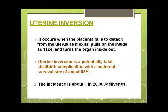Uterine inversion occurs when the placenta fails to separate from the uterus, dragging the inside surface of the uterus outward and turning the organ inside out. One of the most important steps in managing the third stage of labour is placing the left hand on the uterine fundus and applying gentle controlled cord traction. If there is no fundal support and the cord is pulled vigorously instead of giving controlled cord traction, the uterus can invert.